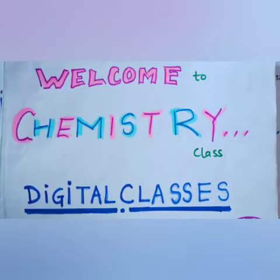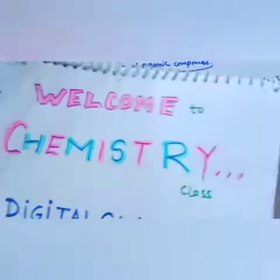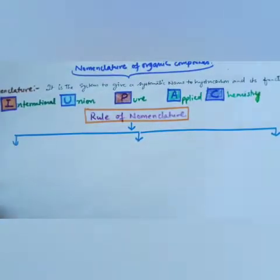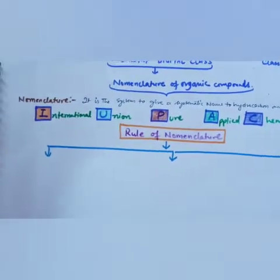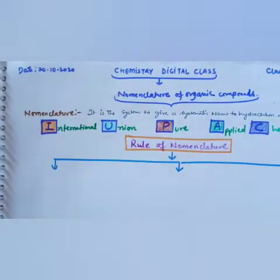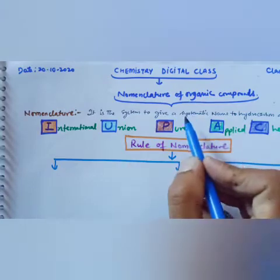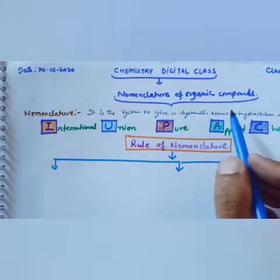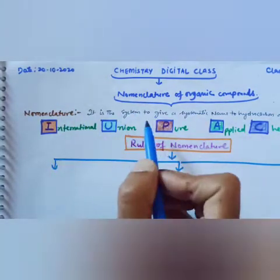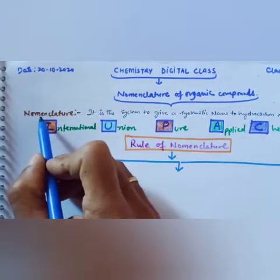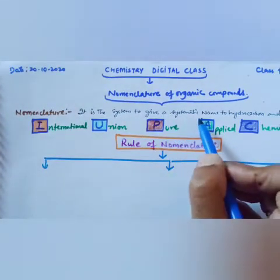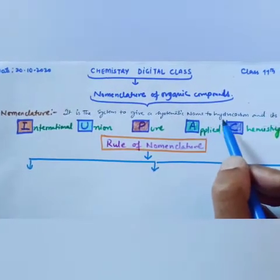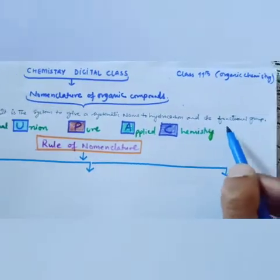Good afternoon dear students, welcome to this chemistry digital class. Today I'm going to tell you about a very important topic related to organic chemistry — that is nomenclature of organic chemistry. Nomenclature is the system to give a systematic name to hydrocarbons and their functional groups.